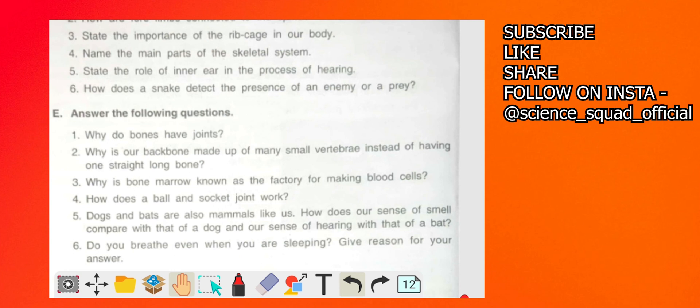Which helps them to move in circular movements, which helps to give them a circular movement. And dogs and bats and mammals like us - how does our sense of smell compared with the dog and our sense of hearing with that of a bat?